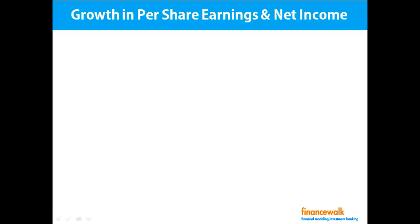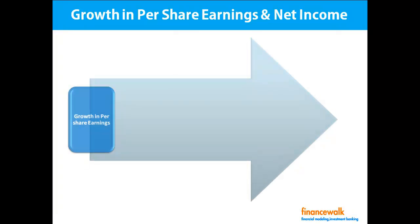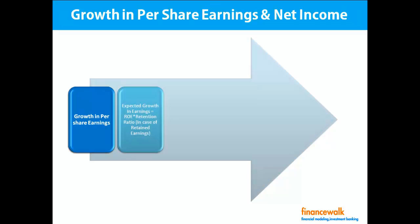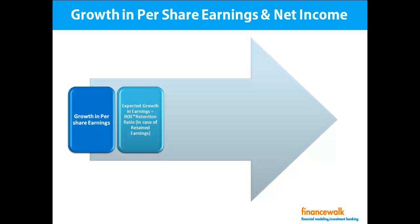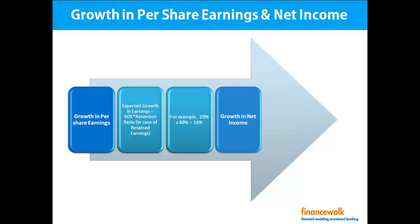For growth in per-share earnings, the formula is: Expected Growth in Earnings = ROE (Return on Equity) × Retention Ratio. For example, if return on equity is 20% and the retention ratio is 80%, then expected growth in earnings = 20% × 80% = 16%.